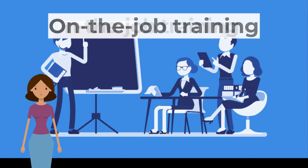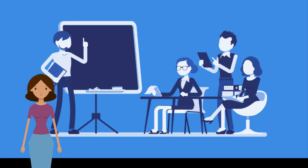The second type is on-the-job training, which occurs by watching a more experienced worker doing the job. The advantages are: it ensures some production from the worker whilst they are training; it usually costs less than off-the-job training; and it is tailored to the specific needs of the business. The disadvantages are: the trainer loses some production time while teaching the new employee; the trainer may have bad habits that get passed on to the trainee; and the training may not lead to qualifications recognized outside the business.